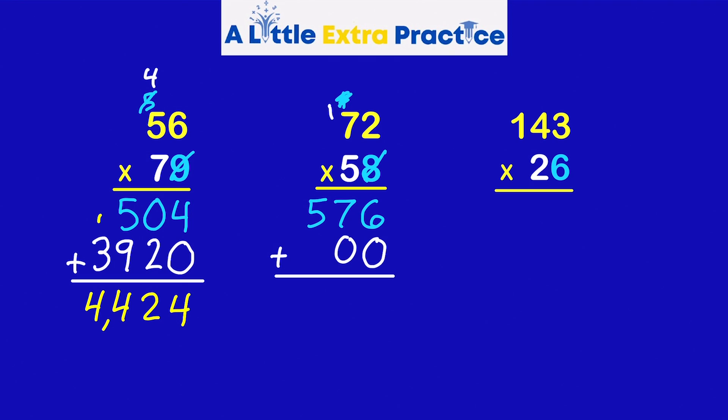5 times 7 is 35. Plus 1 is 36. The 2 partial products are 576 and 3,600. I will add these together. And the product is 4,176.